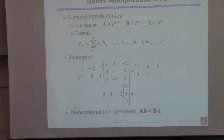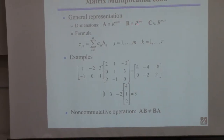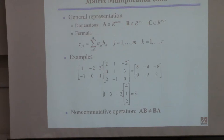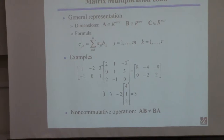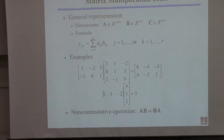Looking at the definition: A is a matrix of real numbers with M rows and N columns; B must have N rows and R columns. The resulting matrix C will have the same number of rows as A and the same number of columns as B — that's M rows and R columns. So here, A has two rows and B has three columns, giving a two-by-three result.